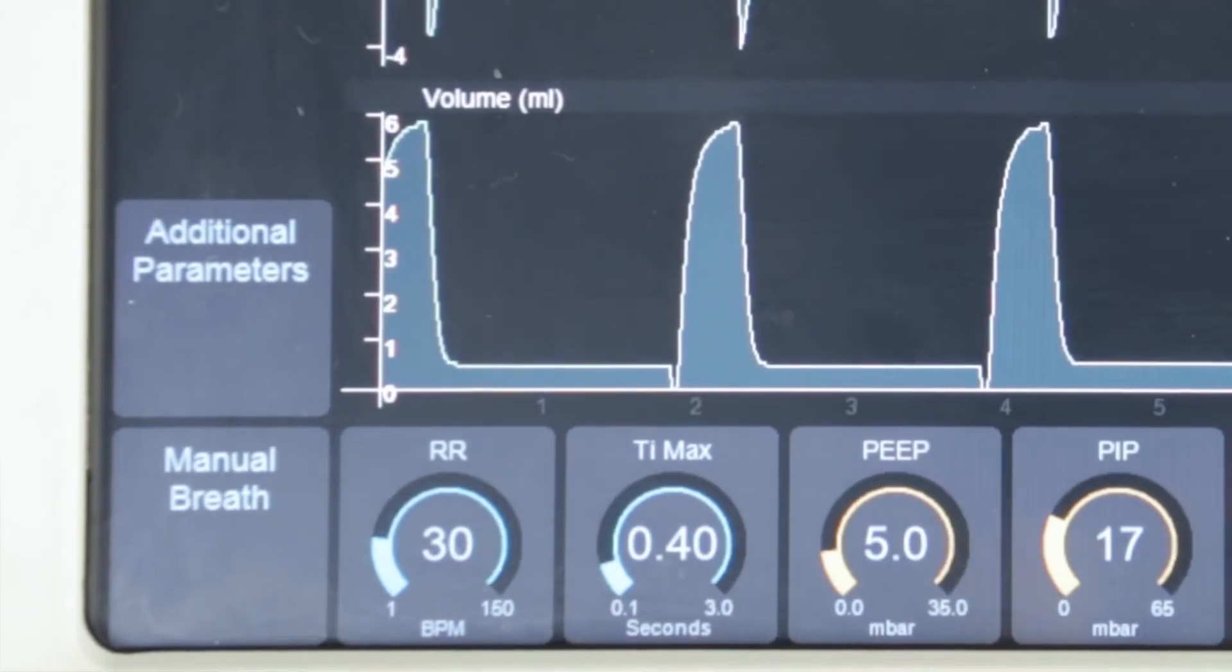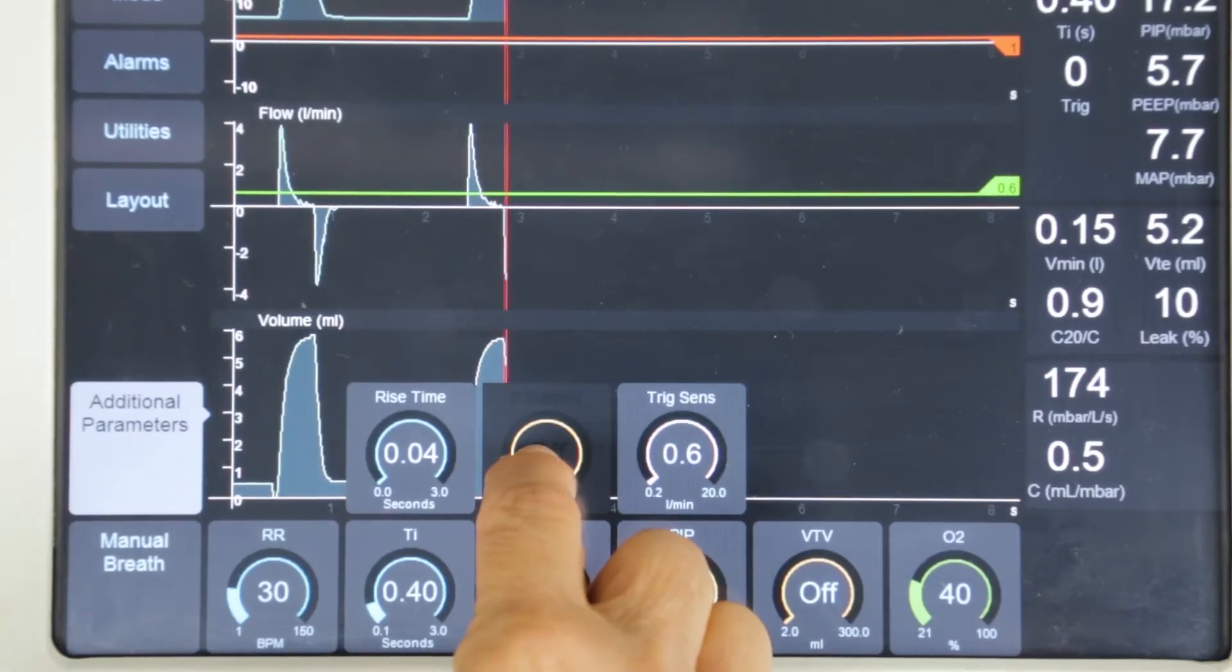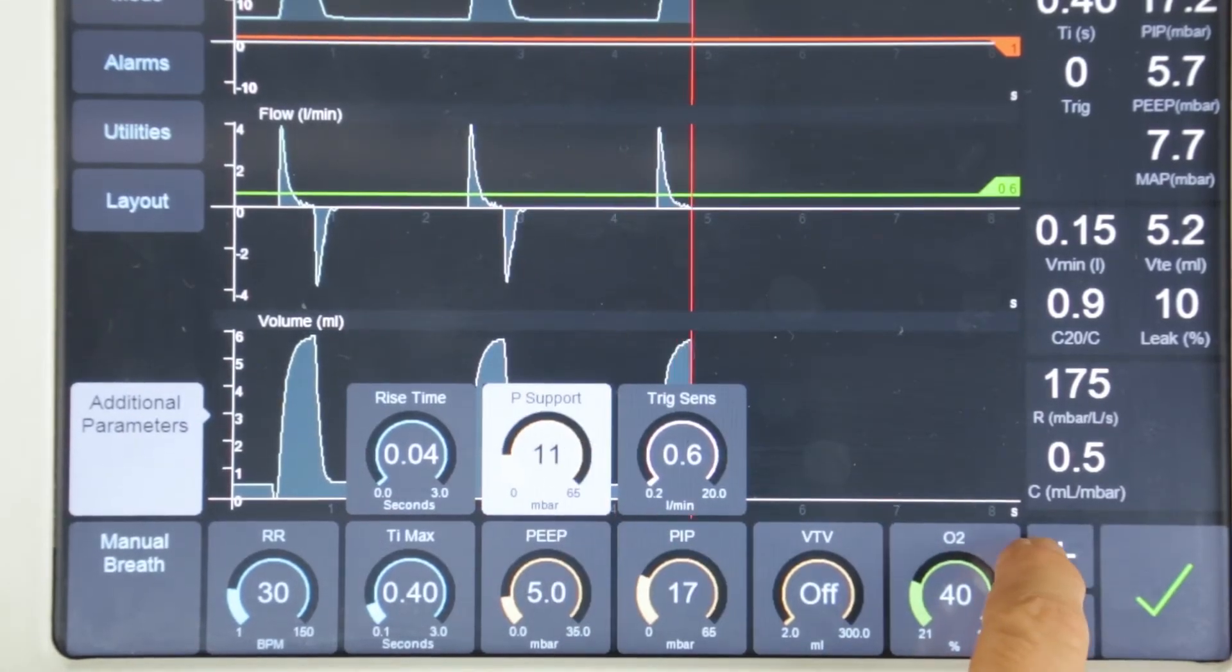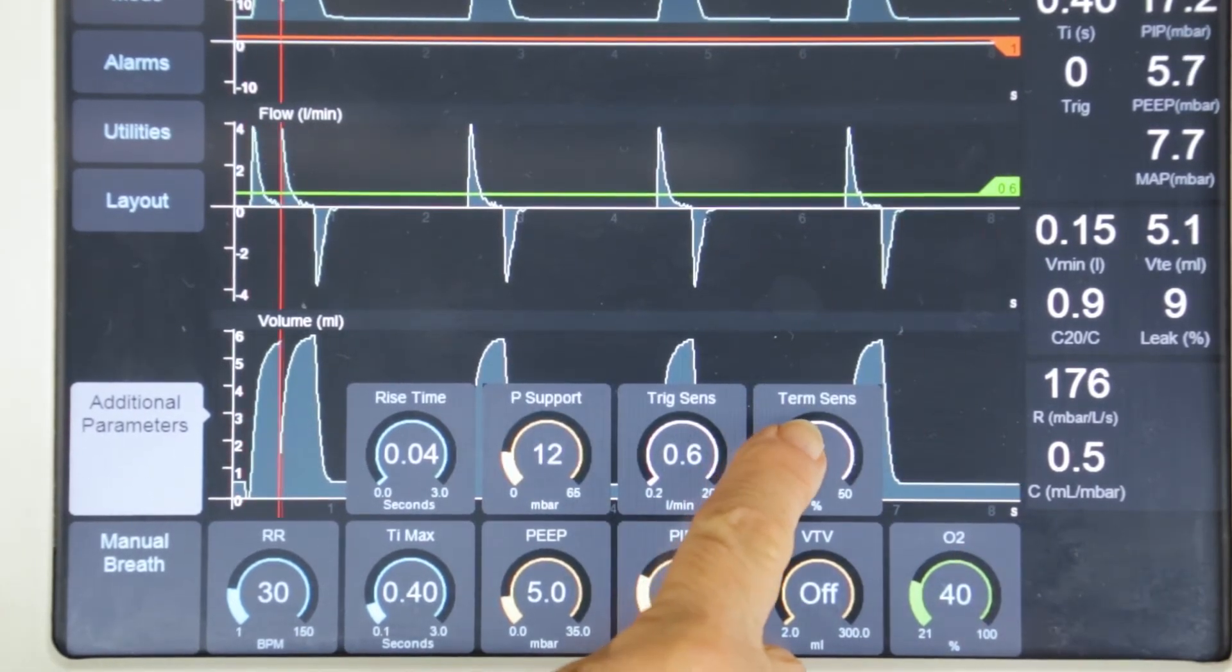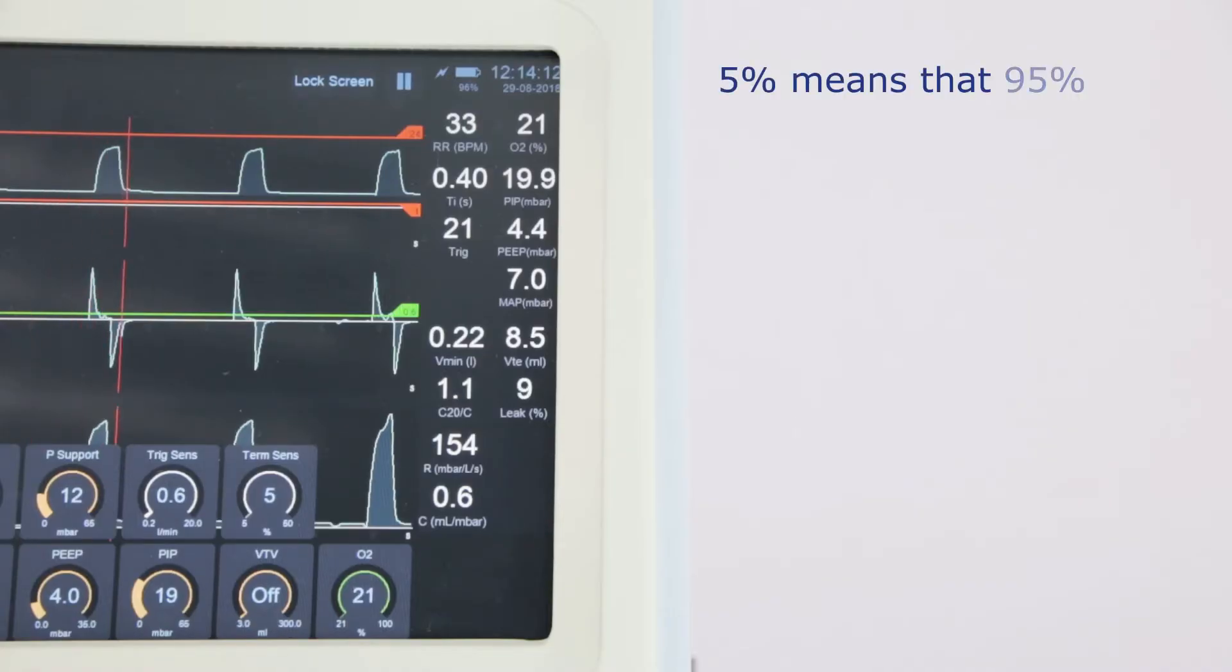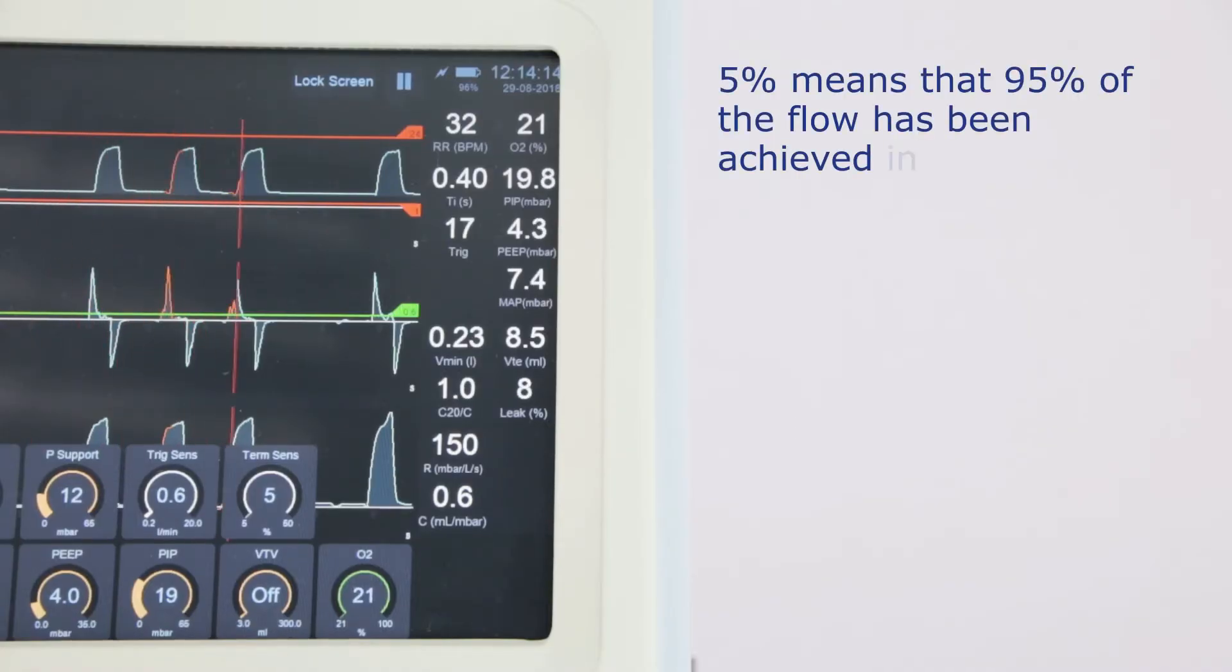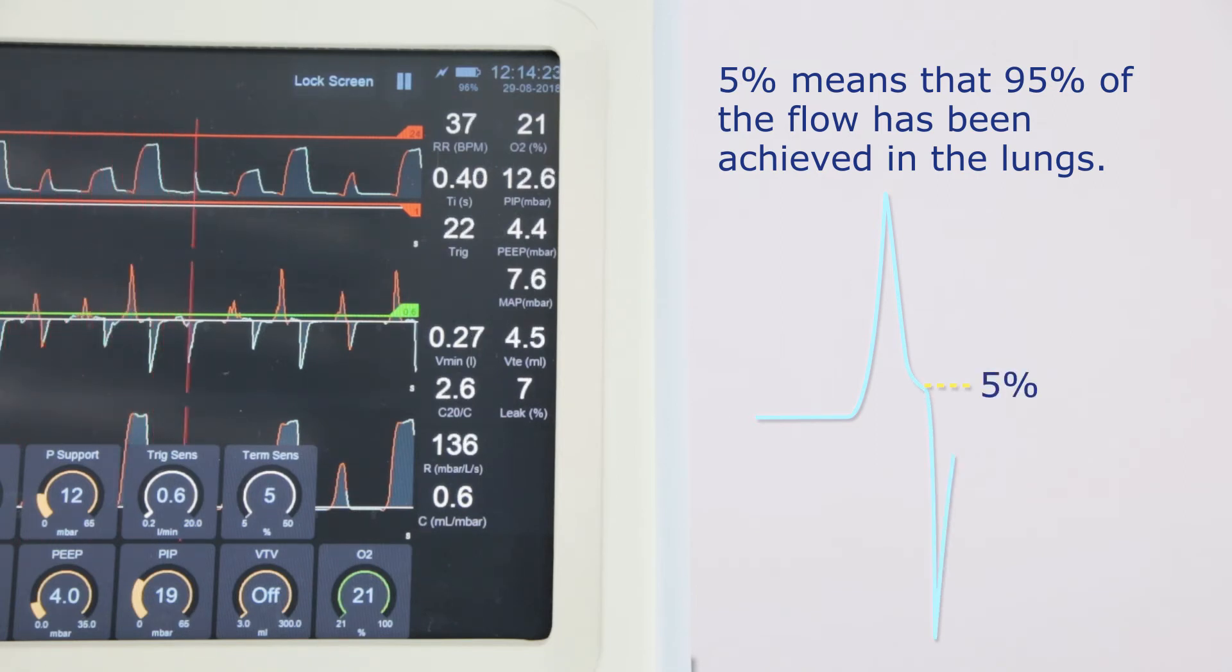To activate PSV in SIMV mode, press on additional parameters and press and hold pressure support. Next to this button is a button called termination sensitivity. The default setting is 5%, meaning that 95% of the flow has been achieved in the lungs. The flow is rapidly delivered, peaks and then decelerates to the termination sensitivity level, and at this point inspiration stops and expiration commences.